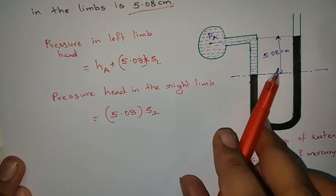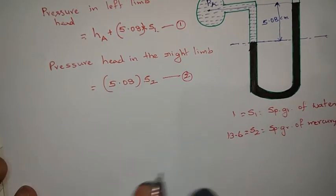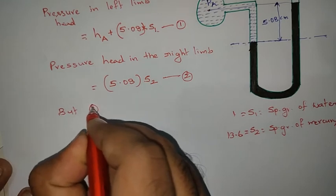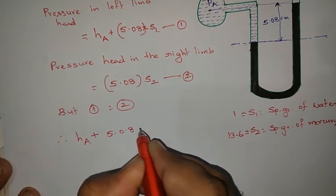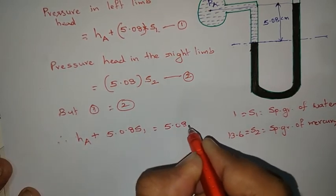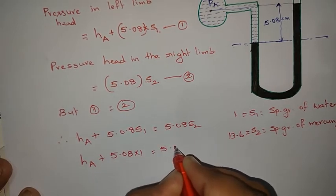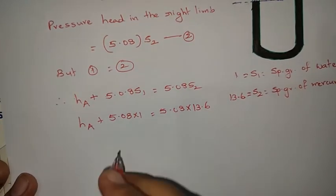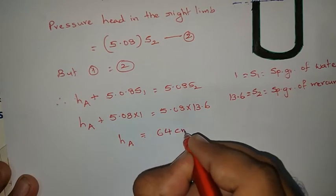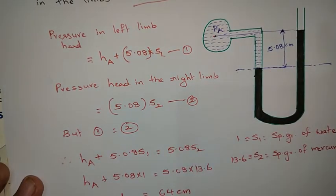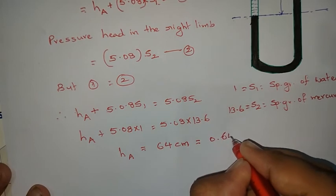Since the pressure head on the left limb equals the pressure head on the right limb, equating the two expressions: H_A + 5.08 × S1 = 5.08 × S2. Substituting values: H_A + 5.08 × 1 = 5.08 × 13.6. Therefore H_A equals 64 centimeters, or converting to meters, 0.64 meters.